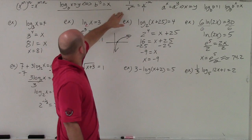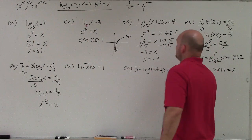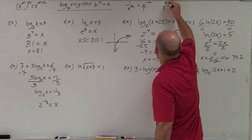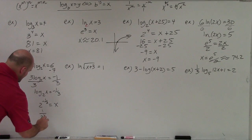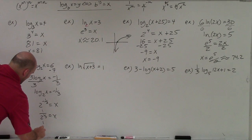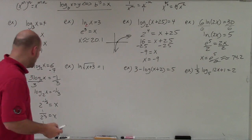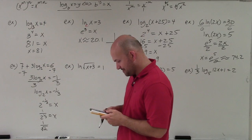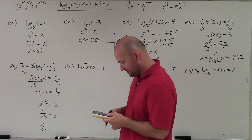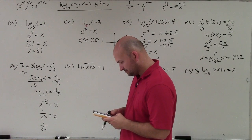To solve for x, I write 2 to the negative one-third equals x. Remember your rules of negative powers: x to the negative m equals 1 over x to the m. And for rational exponents, a to the b equals the b-th root of a. So this becomes 1 over 2 to the one-third, which equals 1 over the cube root of 2. I'll plug in 1 divided by the cube root of 2 and get approximately 0.79.